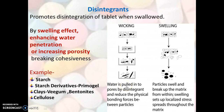In wicking, water is pulled into the pores by disintegrants, reducing the physical bonding forces between particles, which causes swelling. The particles swell and break up the matrix from within. Swelling sets up localized stress which spreads throughout the matrix and eventually the tablet disintegrates. Examples of disintegrants are starch, starch derivatives such as Primogel, clays such as Veegum and bentonite, and cellulose.